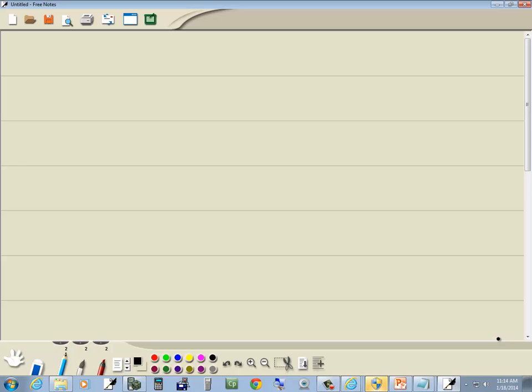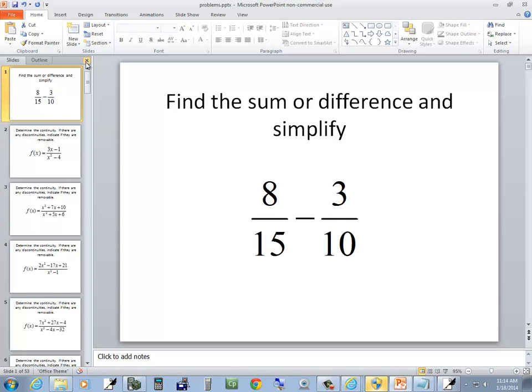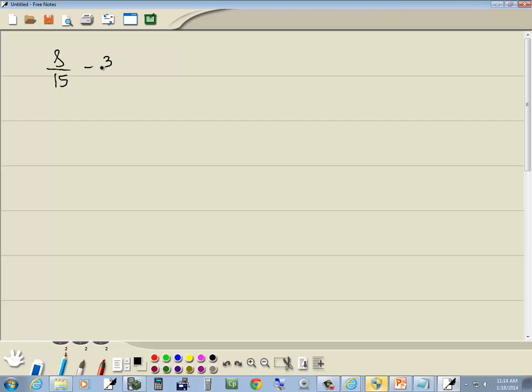Let's take a look at this problem. We've got 8/15 minus 3/10. We're subtracting fractions with different denominators. That's our first step.